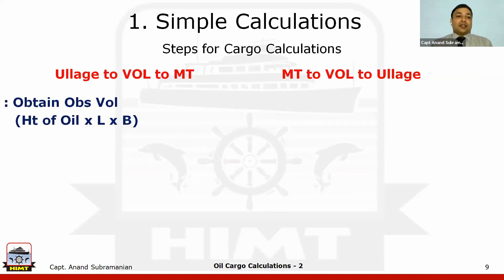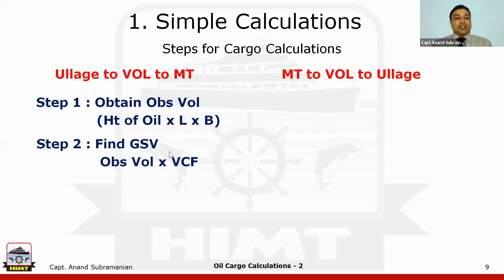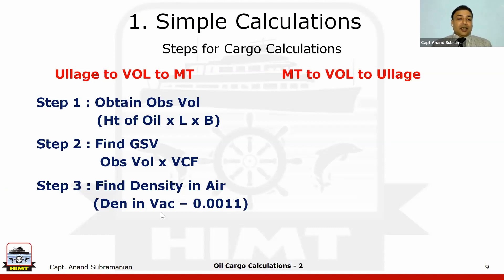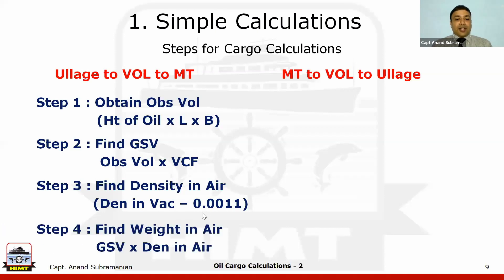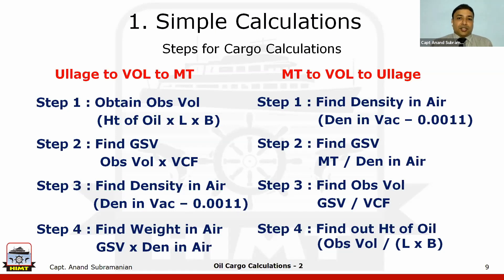To convert from ullage to volume to metric tons: first obtain the volume (height of oil × length × breadth); next multiply the observed volume by VCF to get the volume at standard temperature (GSV); then find density in air = density in vacuum minus 0.0011; and finally multiply density in air by GSV to get weight in air. The reverse process — going from weight in air back to observed ullage — is used when you know the cargo quantity to be carried and need to find the ullage.